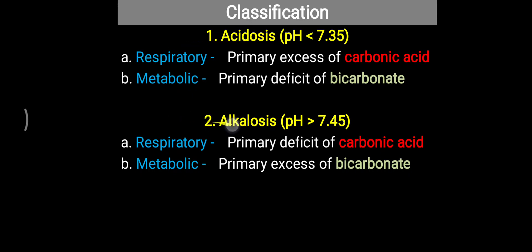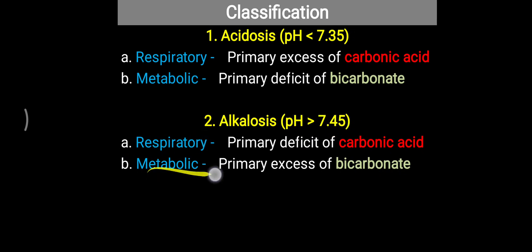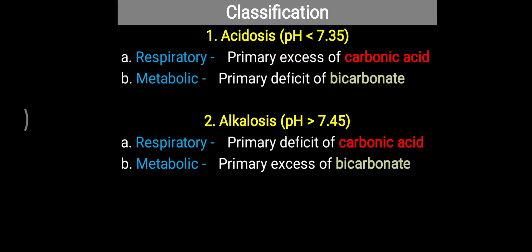To summarize: acidosis has pH less than 7.35 and is of two varieties — respiratory and metabolic. Alkalosis has pH more than 7.45 and is also respiratory and metabolic. For respiratory, remember the mnemonic RC — respiratory is related with carbonic acid. For metabolic, remember MB — metabolic is related with bicarbonate. In metabolic acidosis there is a deficit of bicarbonate, while excess bicarbonate leads to metabolic alkalosis. Respiratory disturbance is always linked to carbonic acid, and metabolic disturbance is always linked to bicarbonate — this will decide which type of disturbance is present.